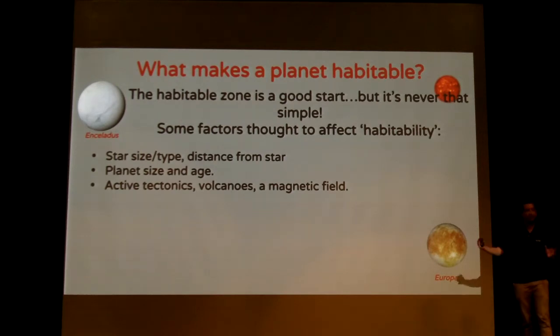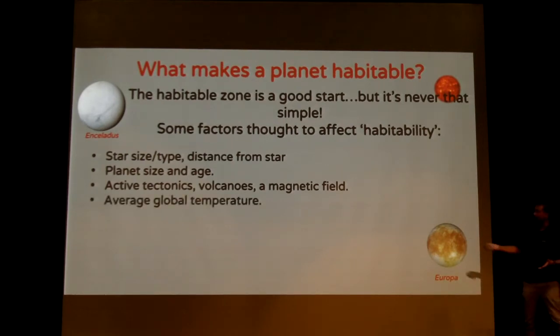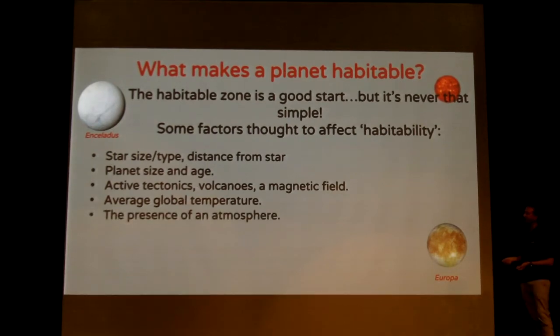So of course, we need a good global average temperature for life. And again, that's connected to all of these. You'll notice they are all interconnected because the planet is a system. And a lot of these components are interconnected because of that. The presence of the atmosphere, of course, is connected to the tectonics, and the distance from the star, which will also affect the global temperature.